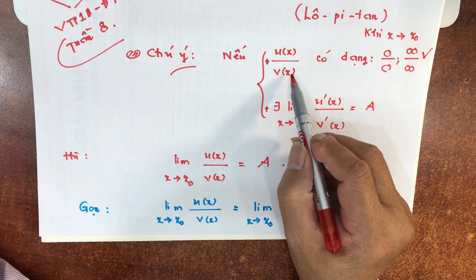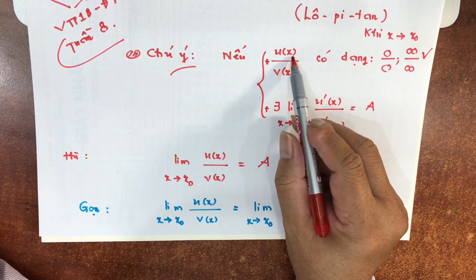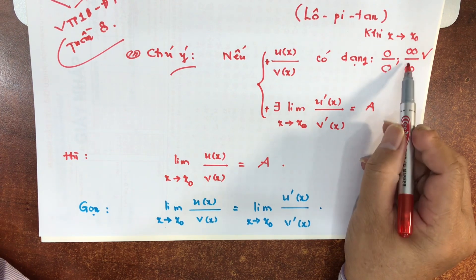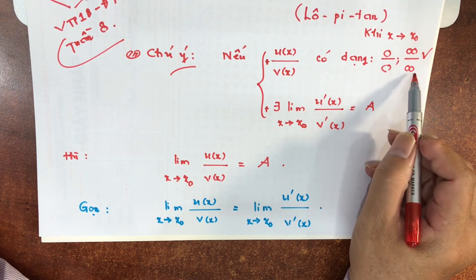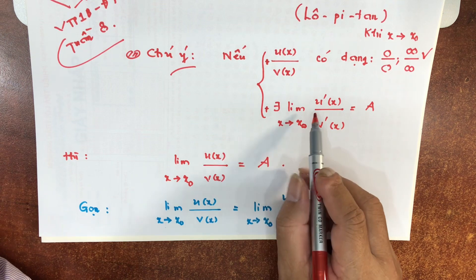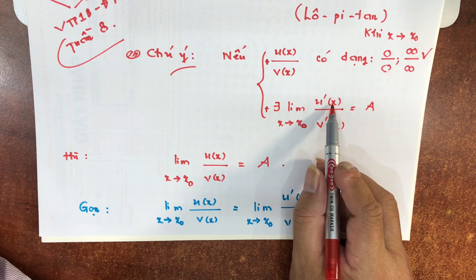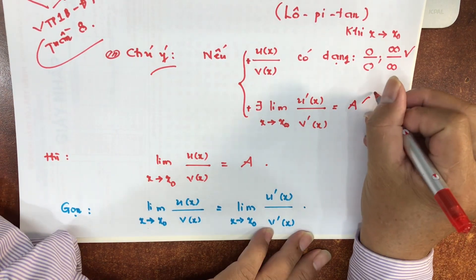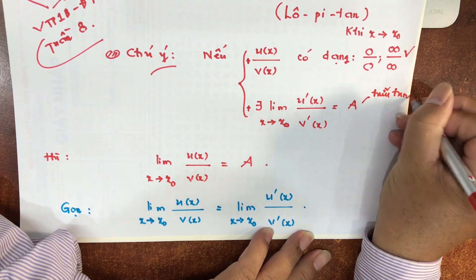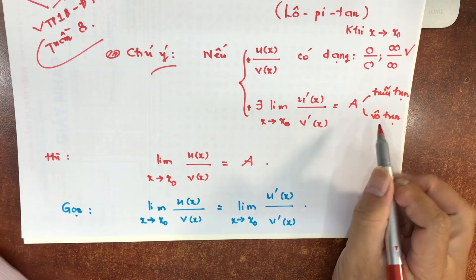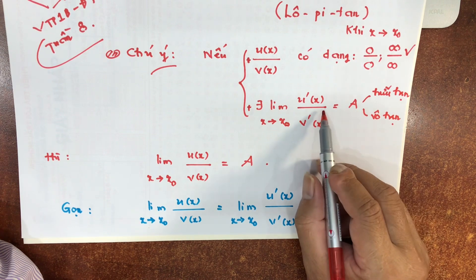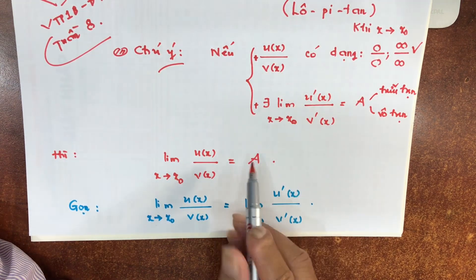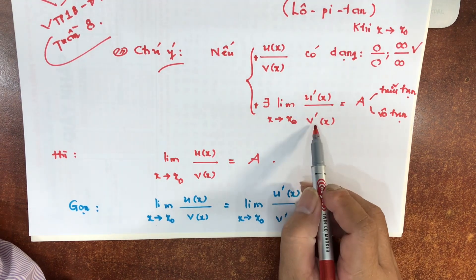Giả thiết thứ nhất: U(x)/V(x) có dạng 0/0 hoặc vô cùng chia vô cùng — vô cùng ở đây có thể cộng hoặc trừ, dương hoặc âm, vì dấu không quan trọng, quan trọng là giá trị tuyệt đối. Giả thiết thứ 2: biểu thức U'/V' có giới hạn khi x tiến về x₀ và giả sử bằng A. Cả lớp lưu ý là A ở đây có thể hữu hạn hoặc vô hạn.